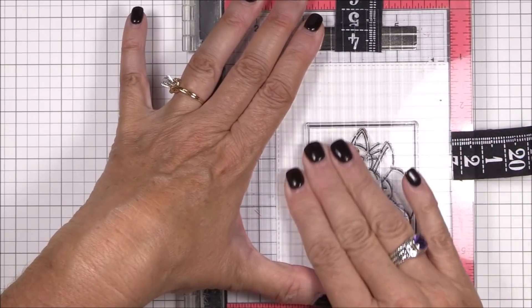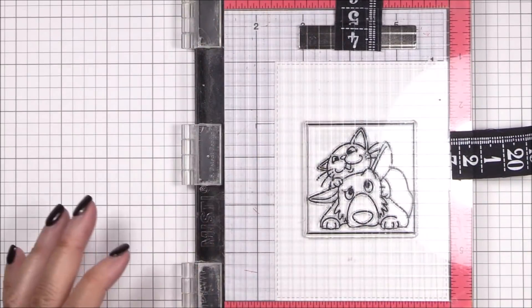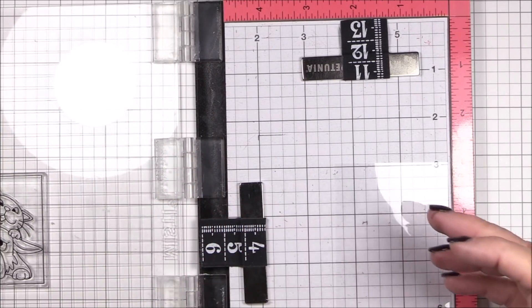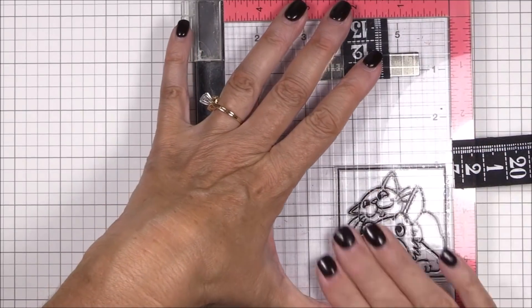I started with an A2 panel of Copic friendly white cardstock and I'm stamping this hilarious image using black licorice hybrid ink. I inked it up and stamped it a couple of times to get a good impression.